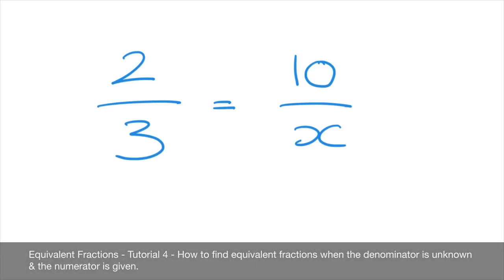We now learn how to write a fraction as an equivalent fraction for which the denominator is unknown, and that would look something like what we're shown here.